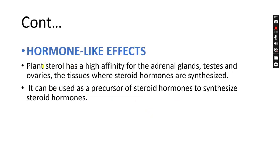Hormone-like effects: plant sterols have a high affinity for the adrenal gland, testes, and ovaries — the tissues where steroid hormones are synthesized. They can be used as precursors of steroid hormones. These are the uses of plant sterols.